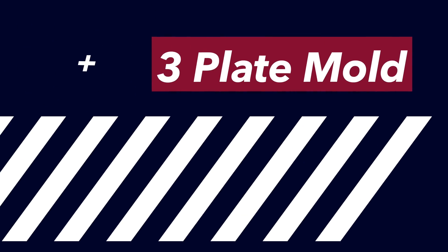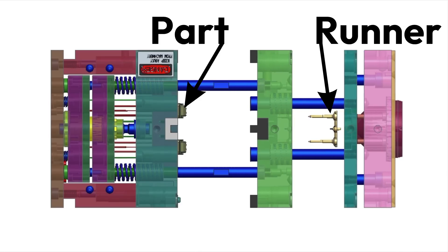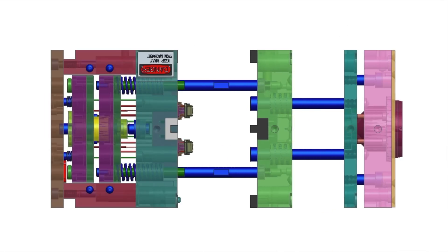Another commonly used mold feature is the 3-plate mold, which in addition to the two halves that we talked about earlier, has a third plate that is floating on rails in the middle of the two halves. This offers the advantage of more complex part geometries, and in most cases, a 3-plate mold is used to separate the part from the runner during the ejection process, which can help improve the manufacturing efficiency of that part.